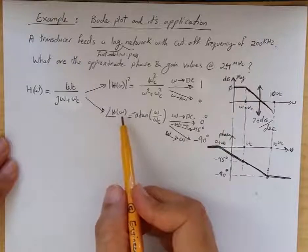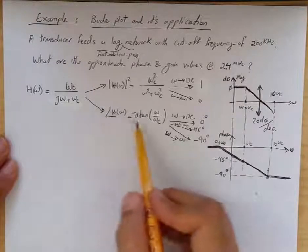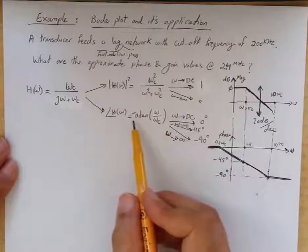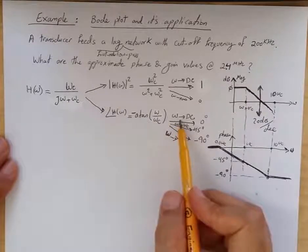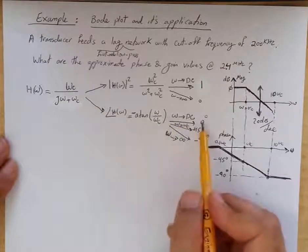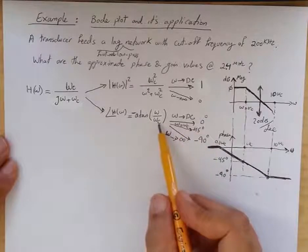For phase, the phase of H(ω) for this system is minus arctan of ω over ωc. When ω approaches DC, this gets to 0 degrees. At ω equal to ωc, right at cutoff frequency,